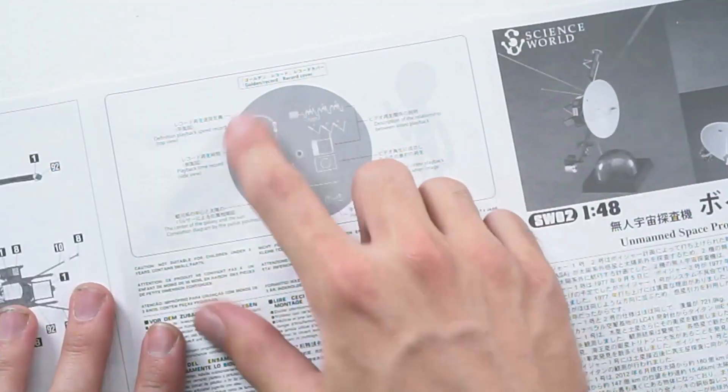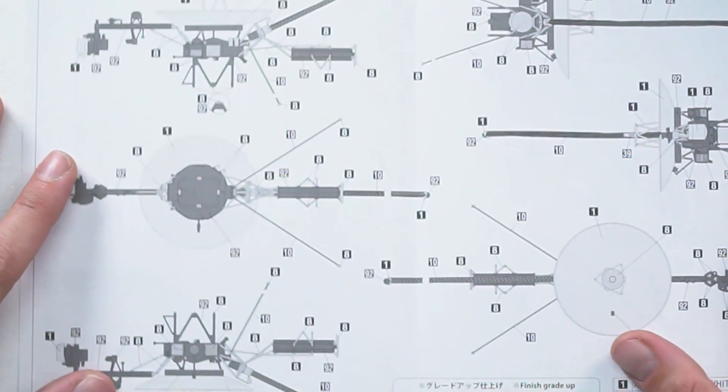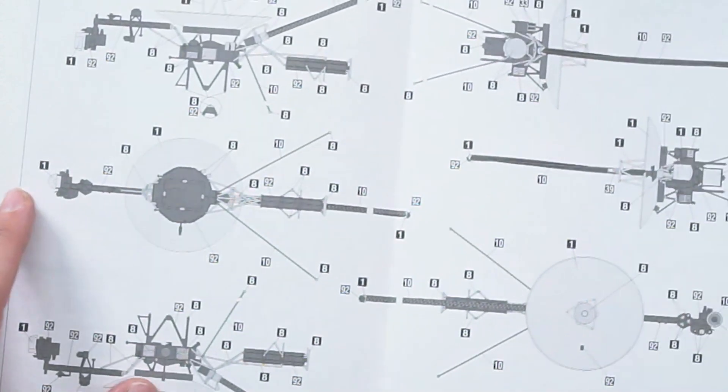We have a parts breakdown. And then, here we go. The golden record. And then paint. You will have to paint this one I believe. But it does look pretty good unpainted.